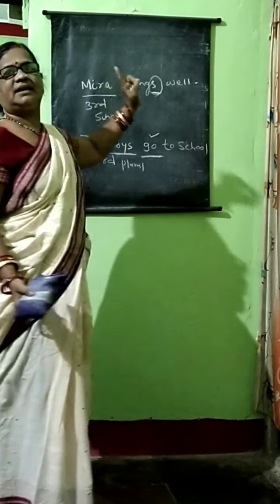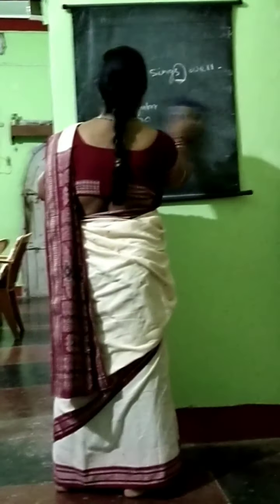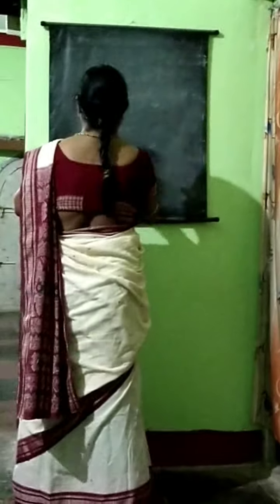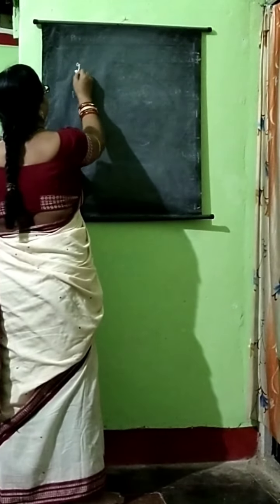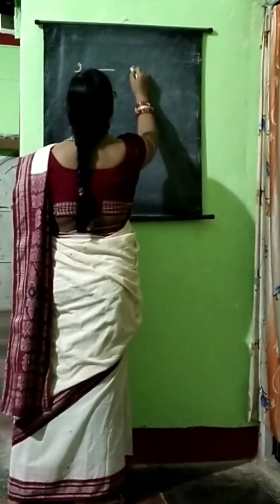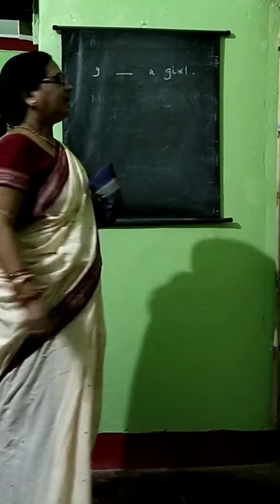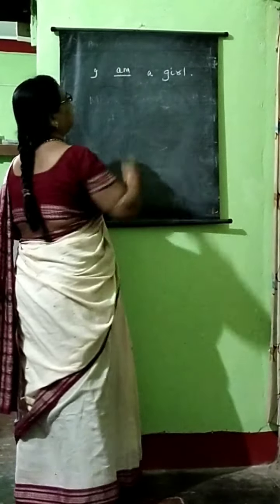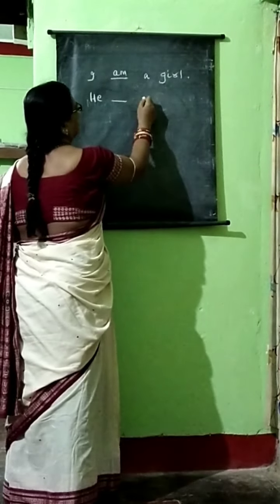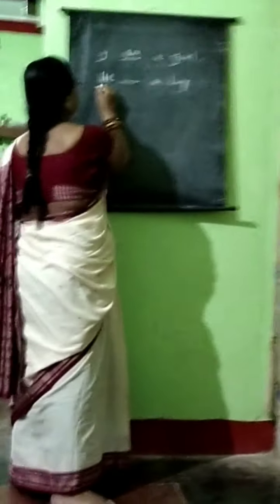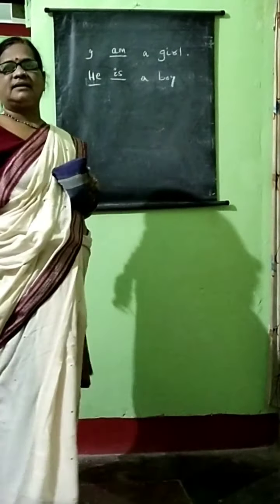I am a girl. He is a boy — 'he' is third person singular number: he is a boy.